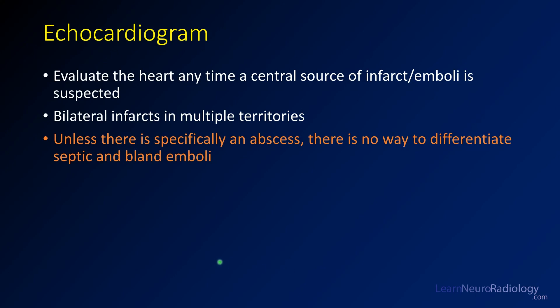The last major systemic test to consider for infection is an echocardiogram. Any time you suspect a central source of infection — if a patient is bacteremic with intracranial infection or has multiple infarcts in a bilateral distribution — think about whether there's embolic disease. When you see multiple infarcts in multiple bilateral territories, you generally can't differentiate septic from bland emboli on imaging alone. You have to rely on clinical features such as white count, positive blood cultures, and other risk factors for infection.